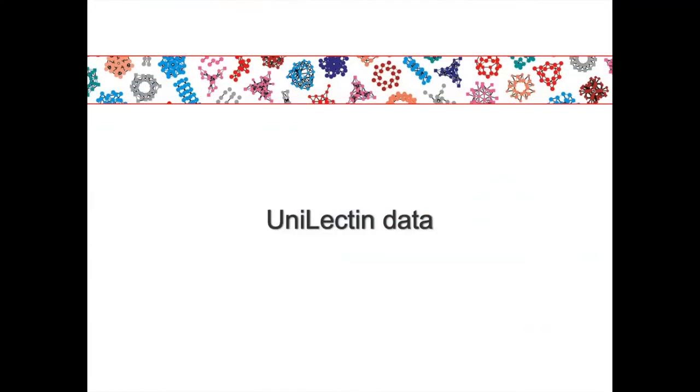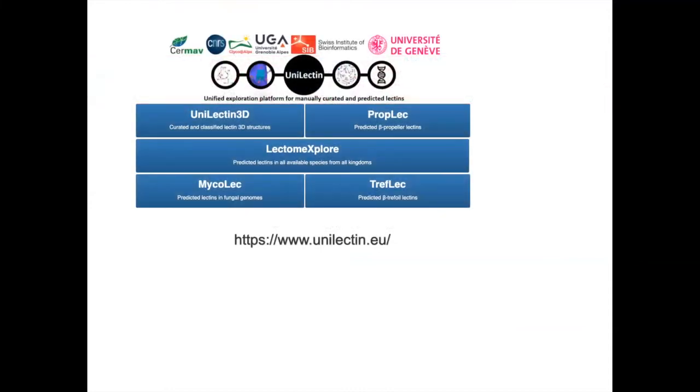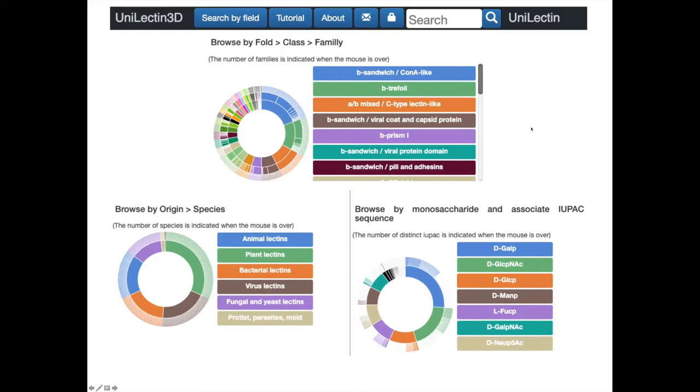We have put together this UniLectin platform that actually has different modules. The most curated module is UniLectin 3D, so really based on the 3D shape of the lectins that are known. We also have predictions with beta-propeller lectins, for instance, large scale prediction, fungal lectins also, and beta-trefoil. The idea is that we are trying to organize that information and structure that information based on folds.